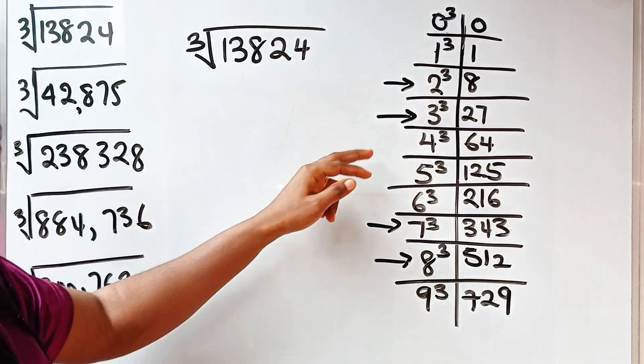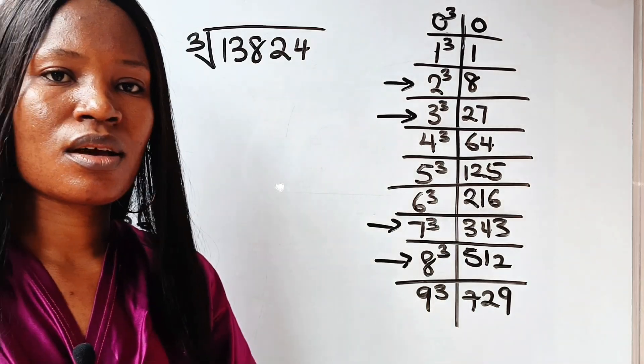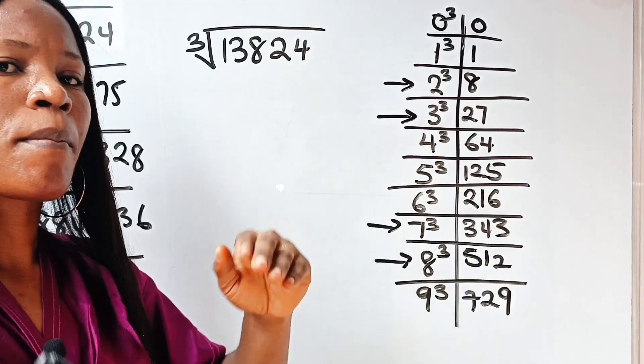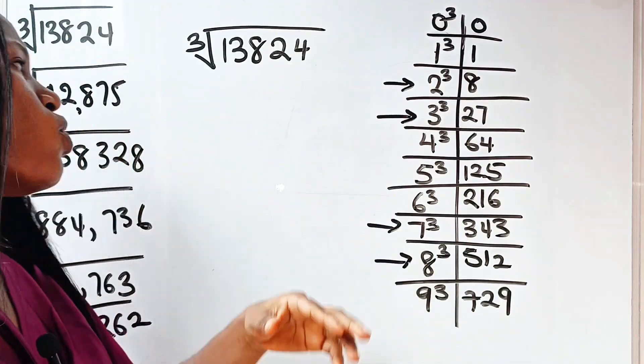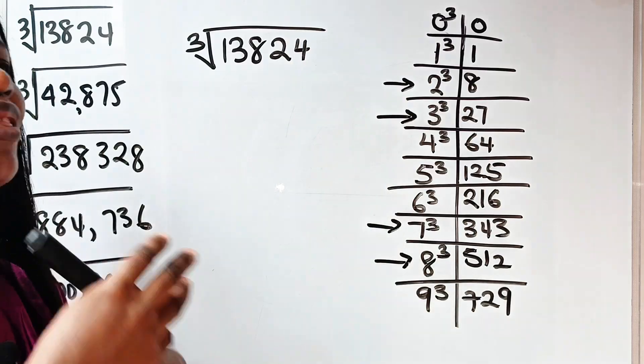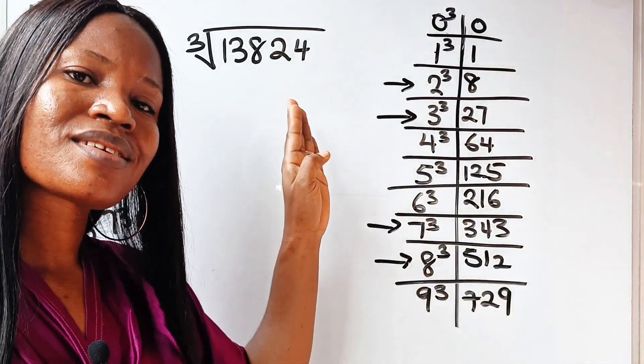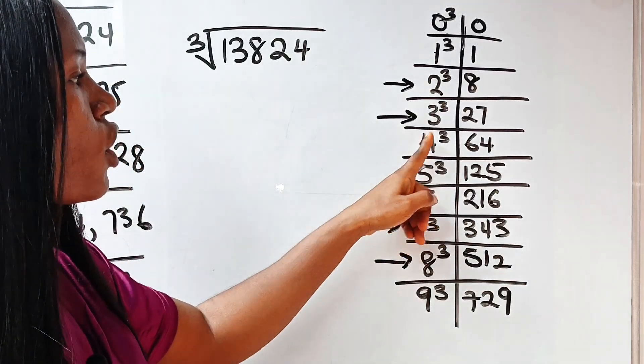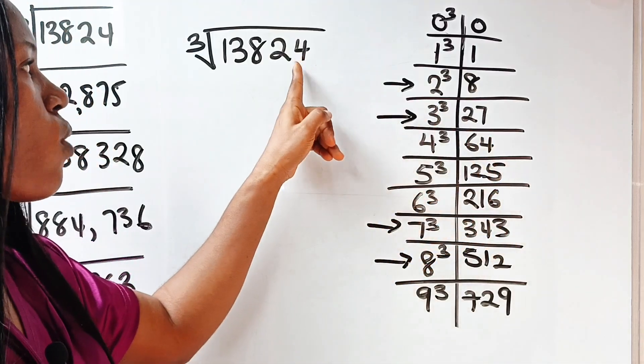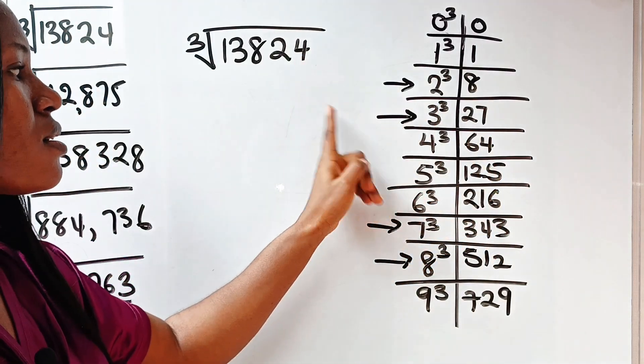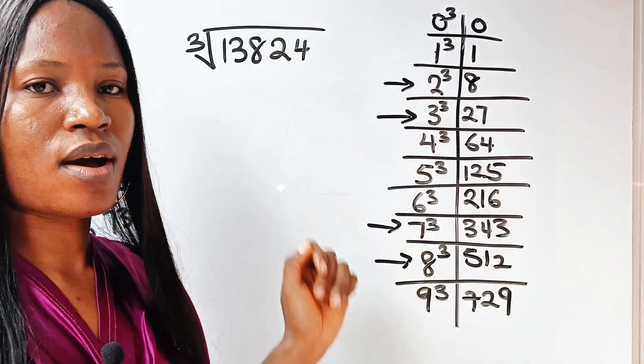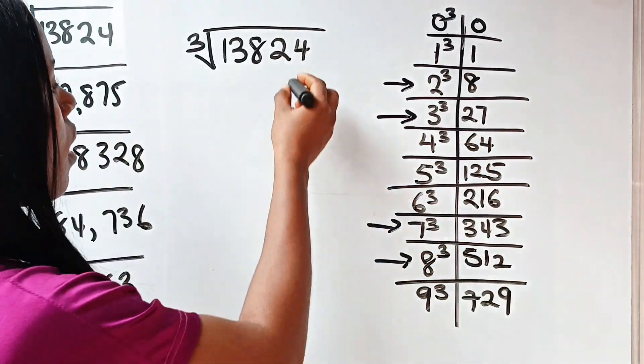Remember what I told you, that apart from 2, 3, 7, 8, you can easily remember that 2, 3, 7, 8. Apart from these 4 numbers, other numbers end with themselves. So this is not 2, this is not 3, this is not 7, this is not 8. So definitely, I don't even need to look at my table to know that the answer will end with 4. Because it's only 4 cubed that will give me a number that will end with 4.